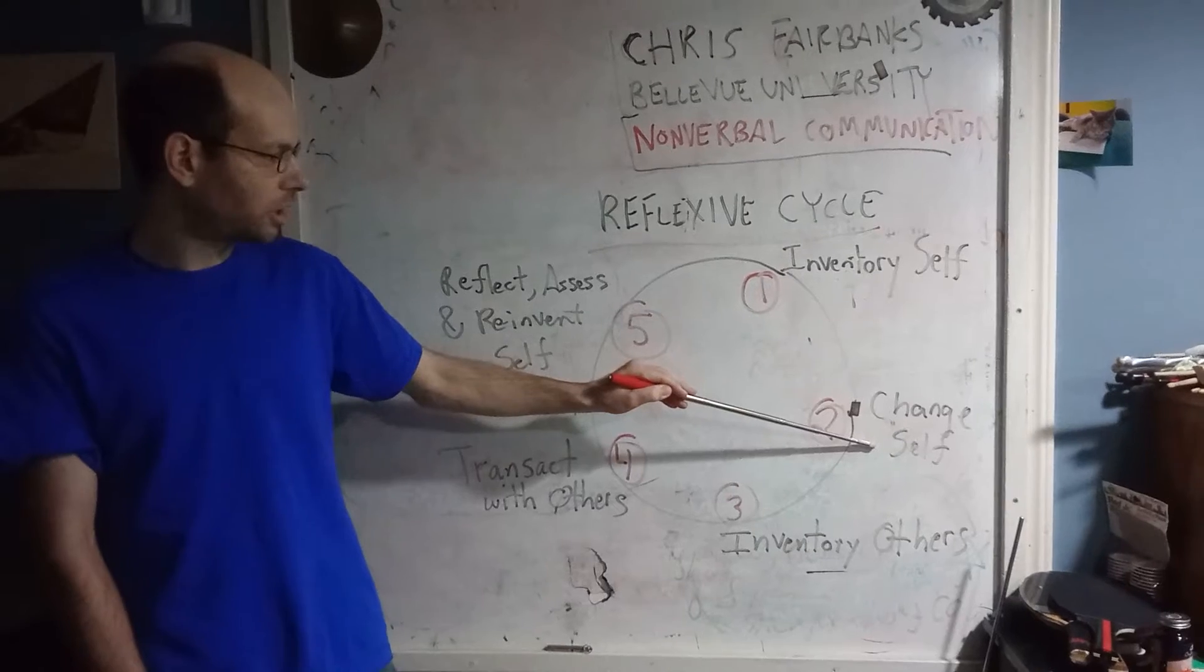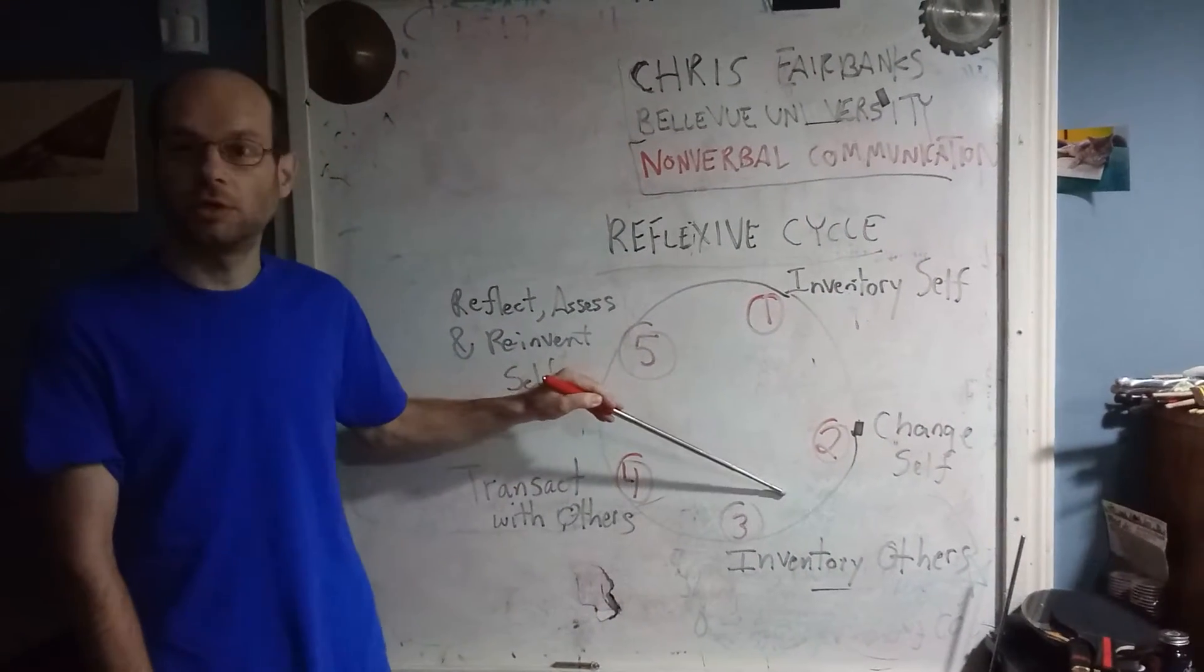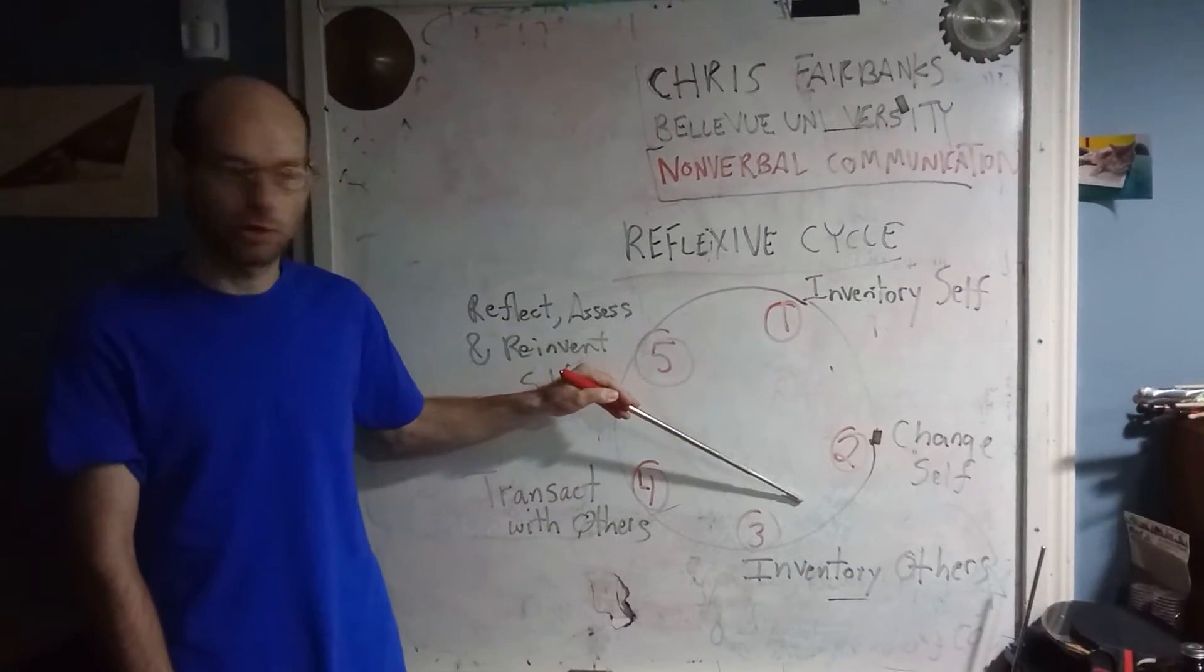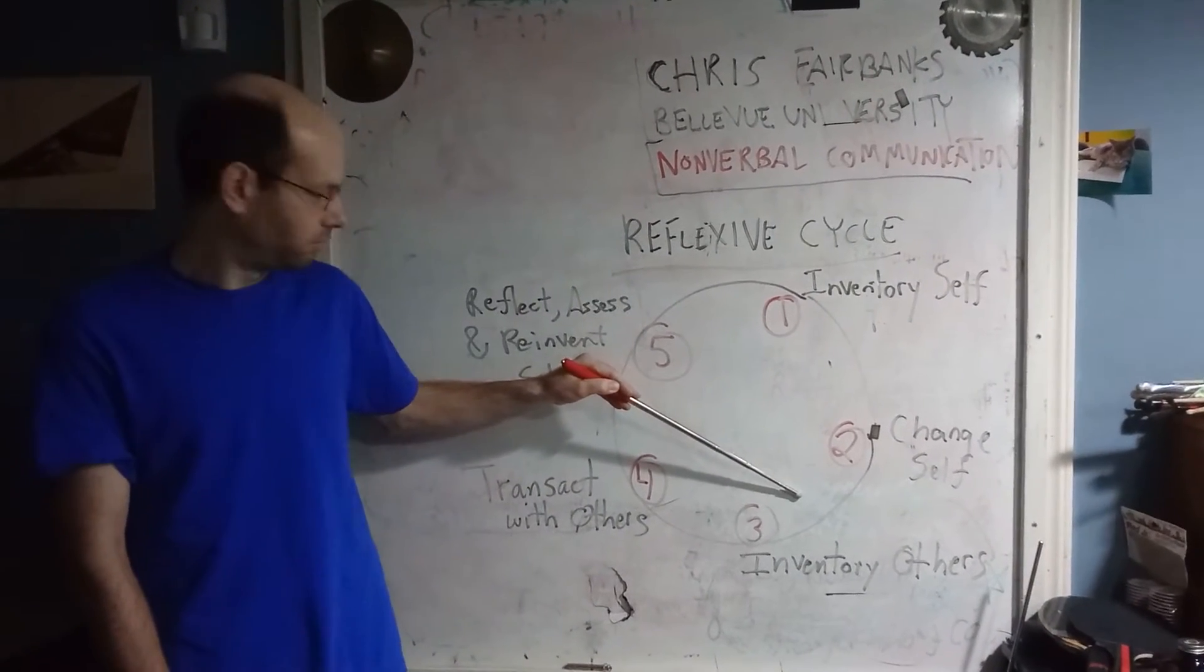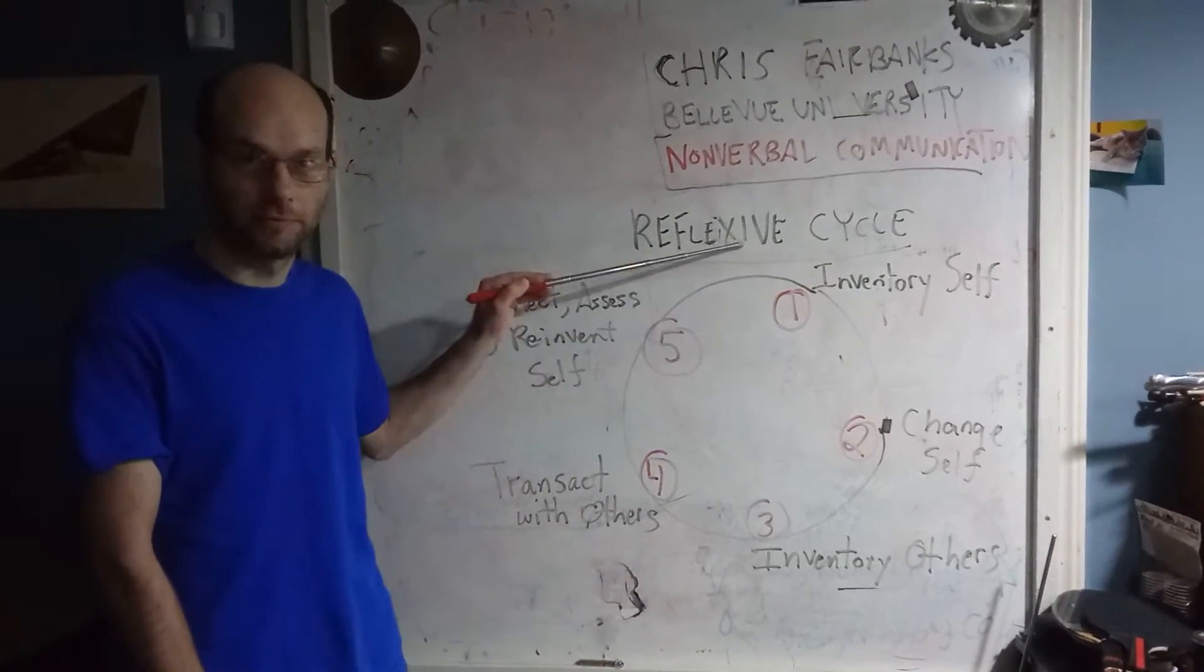Next, you work on changing yourself. That's where you make changes to yourself. Then you inventory others - that's where you inventory other people's things that you want to look at about nonverbal communication and the reflexive cycle.